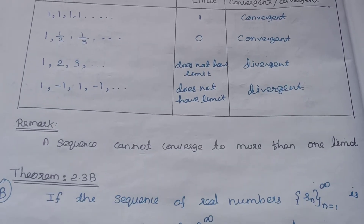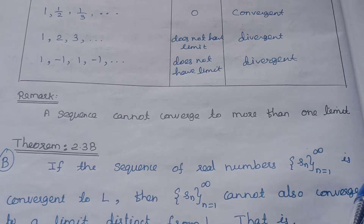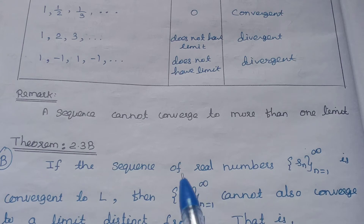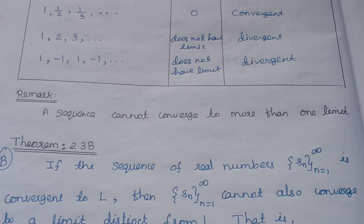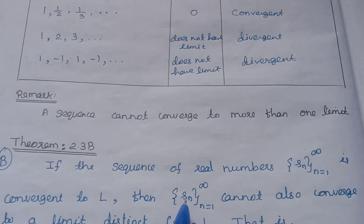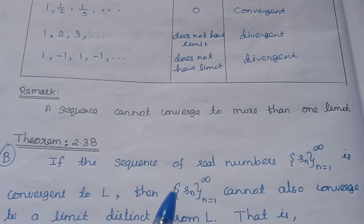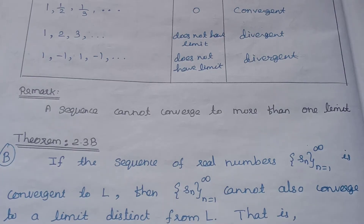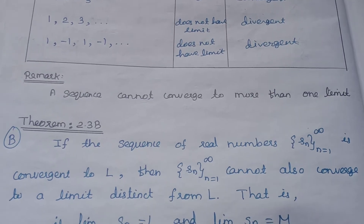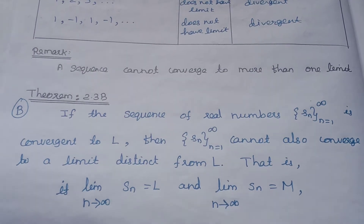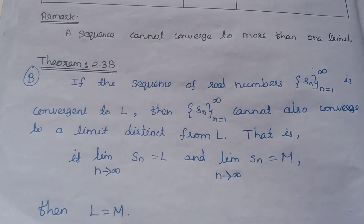If the sequence of real numbers is convergent to L, then by definition, as n tends to infinity Sn approaches L, meaning the modulus of Sn minus L is less than epsilon for n greater than or equal to some N. The choice of epsilon matters. Now, suppose a sequence Xn cannot converge to a limit distinct from L. If we have two different limits L and M, by definition if the limit as n tends to infinity of Sn equals L and also equals M, then L must equal M. This means the limit is unique.